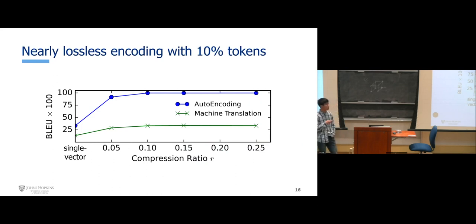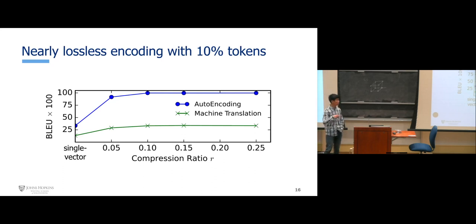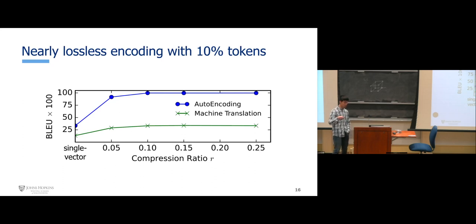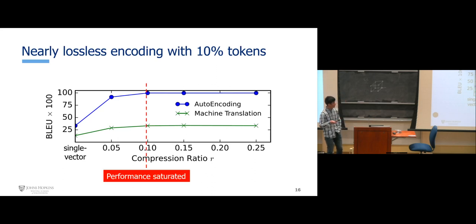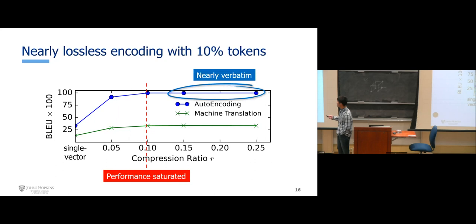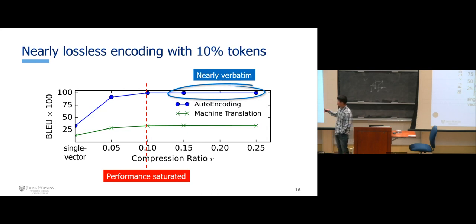What is the sufficient compression ratio for Nuggets? We show the BLEU score for autoencoding and machine translation at different ratios. Surprisingly, performance saturates after 10% of tokens are selected as Nuggets — meaning 10% is already a very sufficient compression ratio. Another finding is that after 10% tokens are selected, the autoencoding BLEU score is close to 100%, meaning it's almost lossless encoding — the input is almost perfectly reconstructed.